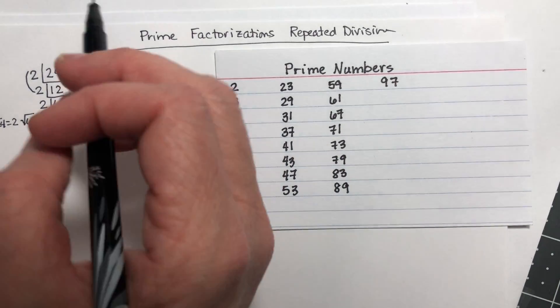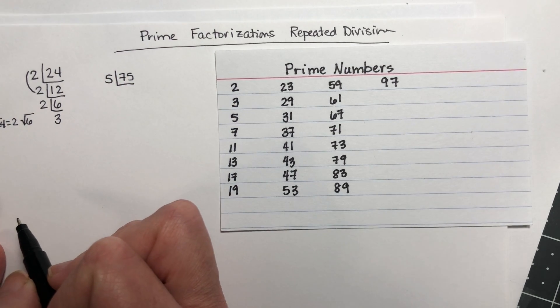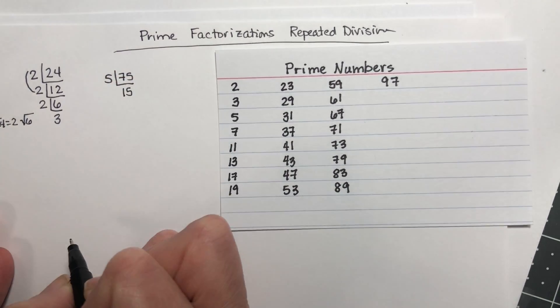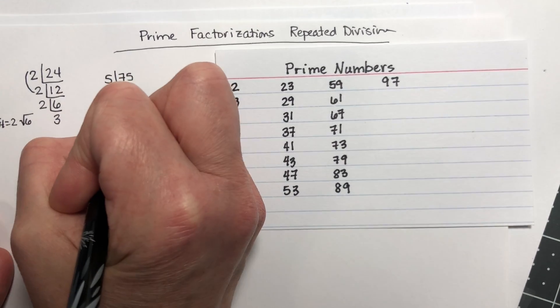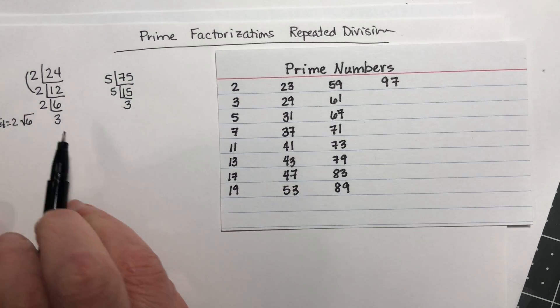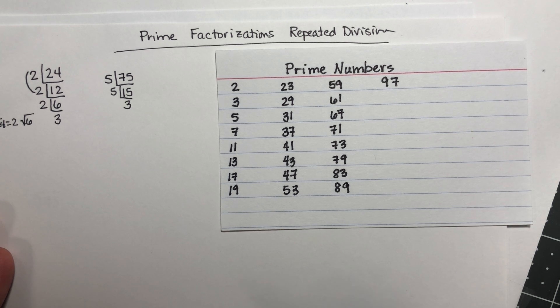75 divided by 5 is 15, and then 5 goes into 15 again, leaving you with a 3. Now I tend to stick with the same number as long as I can, just because it makes it easier to pair them up. But you're going to end up with the same numbers no matter what. So if you've done 5 and then 3 and then 5 again, it's going to be okay.